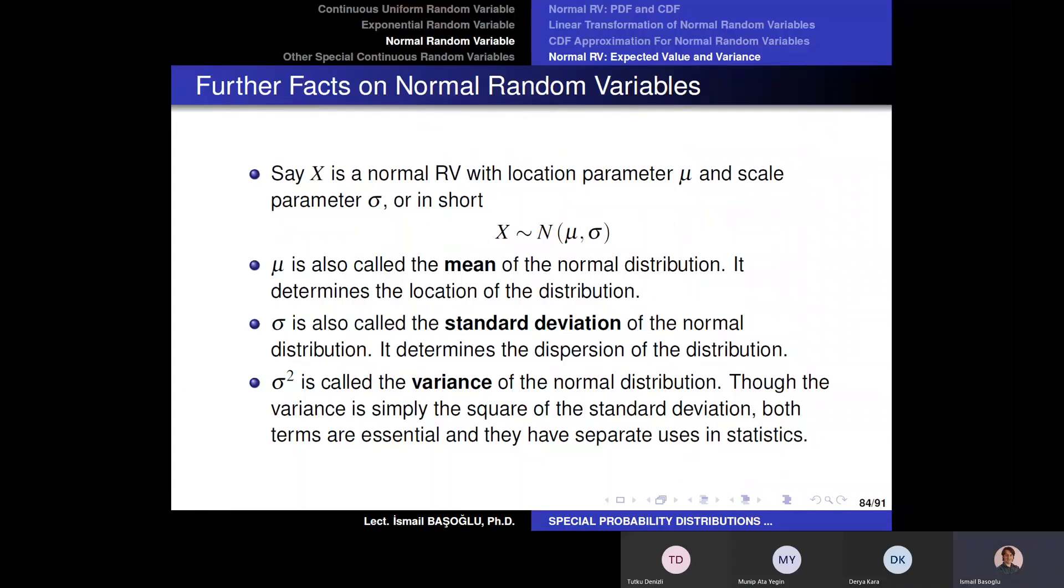Okay, now my friends, before completing this chapter, I do not want to give any break right now. I'm going to give a 10 minutes break later, but I need to complete this chapter as I have told you. Now, let's just say we have a normal random variable with location parameter mu and scale parameter sigma. X is normally distributed with location parameter mu and scale parameter sigma. Now, mu here, the location parameter, is also called the mean of the normal distribution or the mean of this random variable. The expected value, the mean, the average of this normal distribution is mu. And it determines the location of the distribution.